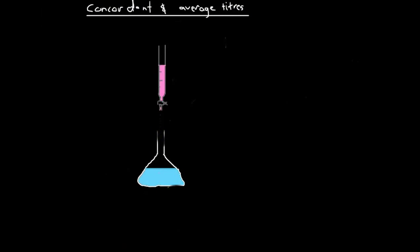What we're going to look at here is the idea of concordant and average titers. Titration is all about accuracy — we're trying to obtain, to a higher degree of accuracy, the concentration of a solution, making it a standard solution. Standard solutions are solutions for which we know the concentration to a higher degree of accuracy, so we can say that we're standardizing the unknown solution by figuring out its concentration.